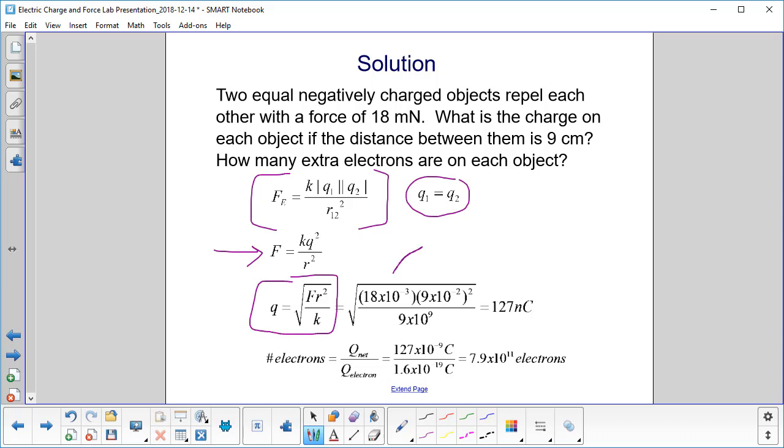We have our force, that's millinewtons, 18 millinewtons. Then we have the distance between them, and make sure you convert centimeters to meters, so in this case that's 9 times 10 to the minus 2 meters.